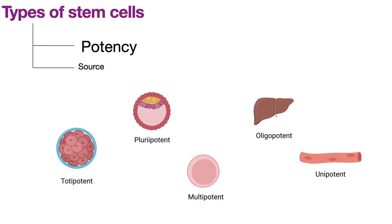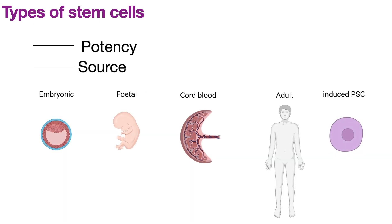Oligopotent stem cells reside in tissues in a quiescent state and can divide and differentiate into two to five different cell types found in the tissue or organ where they are homed. For example, an intrahepatic stem cell of the liver can give rise to hepatocytes and bile duct epithelial cells. Finally, unipotent stem cells can only differentiate into one specific cell type but have a high proliferation ability — for example, muscle stem cells that re-enter the cell cycle upon injury and differentiate into myocytes.